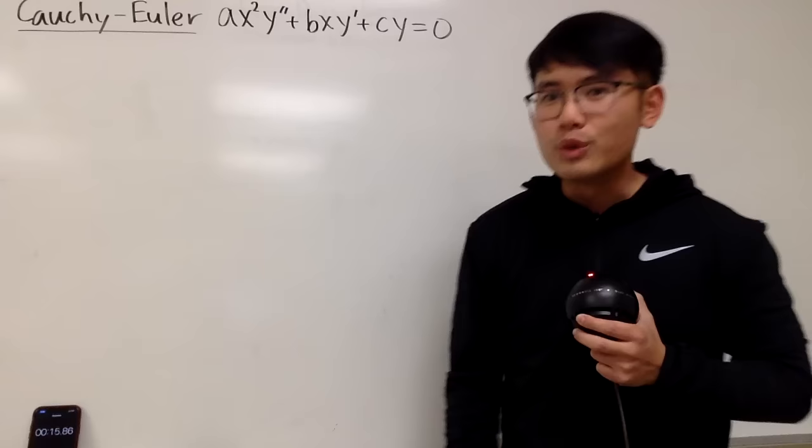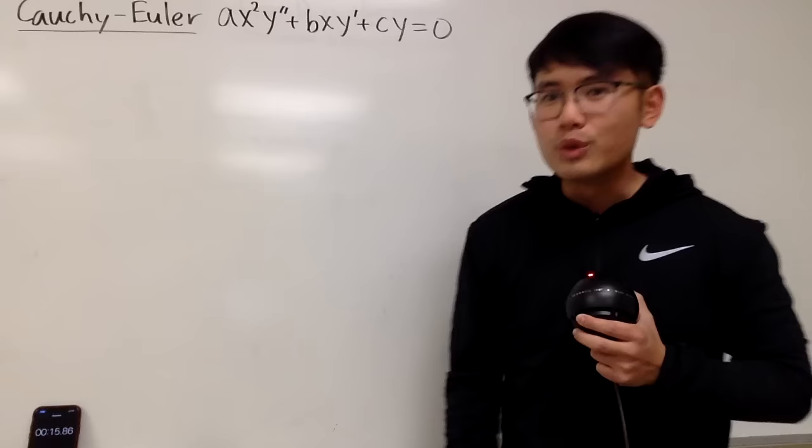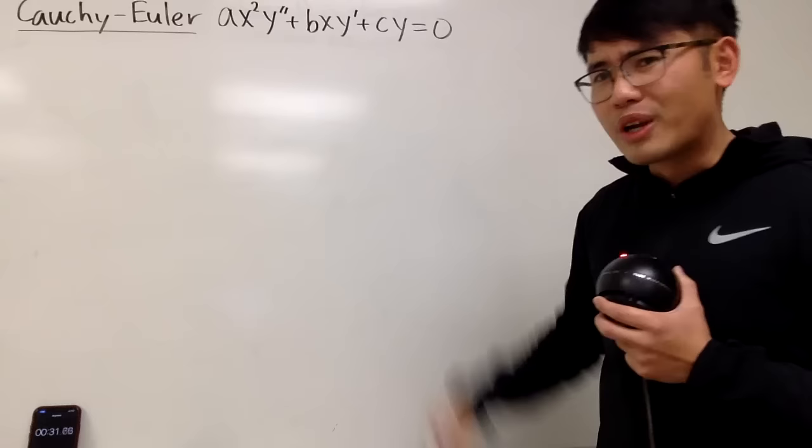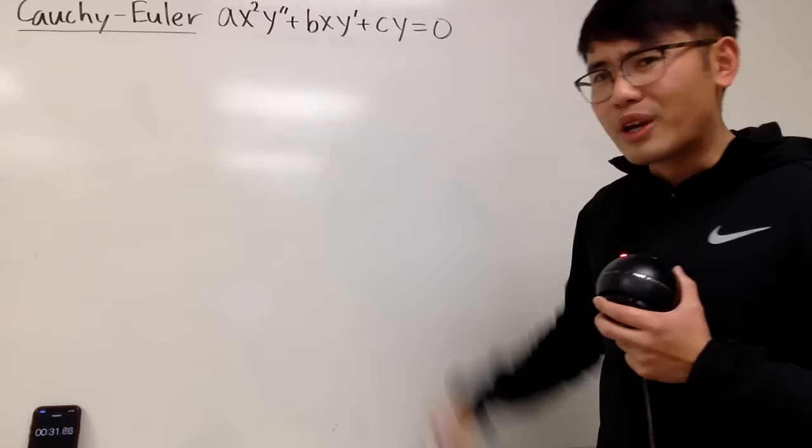Let's make some observations. We have ax² times y double prime, then you differentiate the function and multiply by x to the first power times b, and then the original function times some constant c — all together equal to zero. That means the functions and their derivatives have to be somehow related.